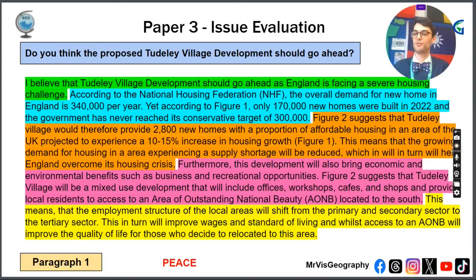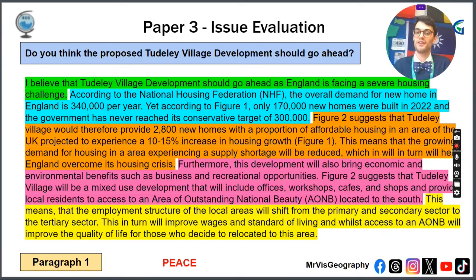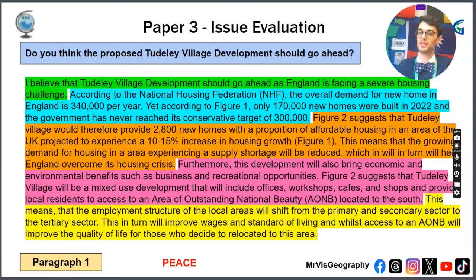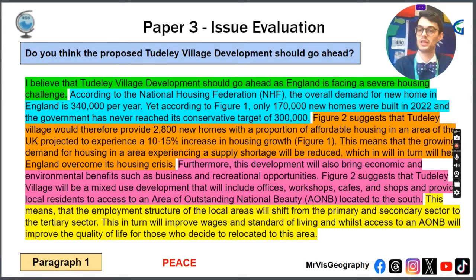Ultimately, it means we're going to be phasing away from primary and secondary sector — the current farmland — to tertiary sector. Therefore, that will boost wages, boost the standard of living and quality of life, because you're also living next to an area of outstanding natural beauty.